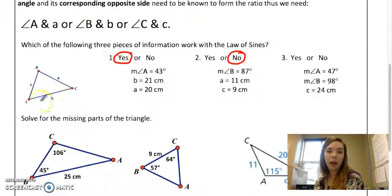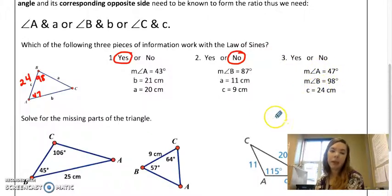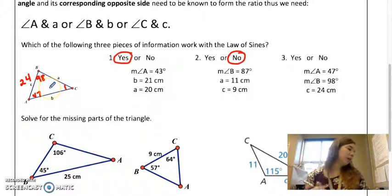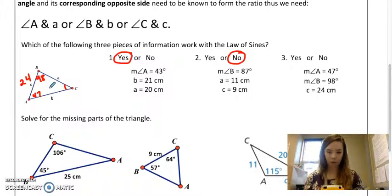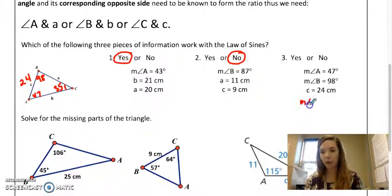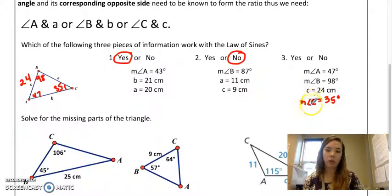Here, number three, I have 47 for A, 98 for B, and 24 for C. Now at first glance, none of these are the same letter, but the difference for this one is I can find angle C because these have to add to 180. So if I take 180 minus 98 and 47, then I have 35. So really, I do have the angle C also. Since I have two of the same, it works.